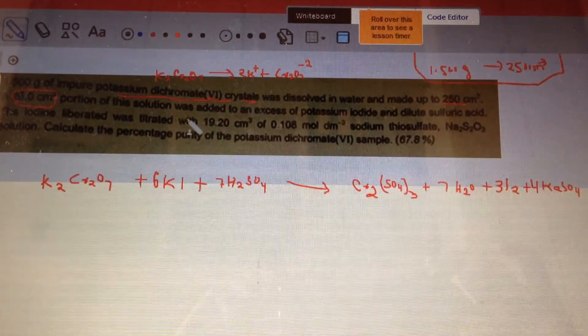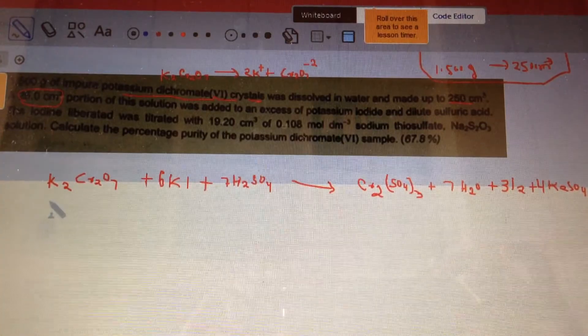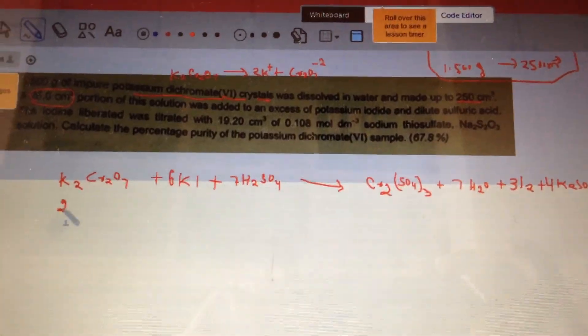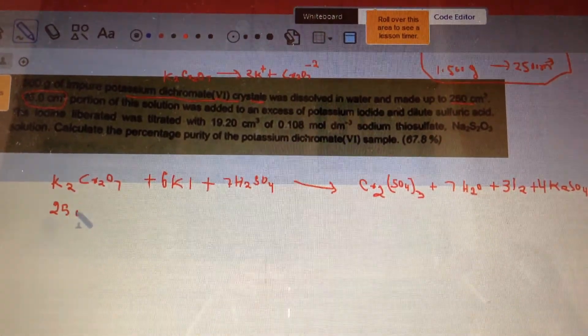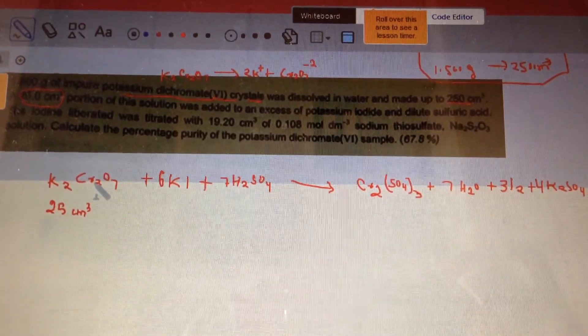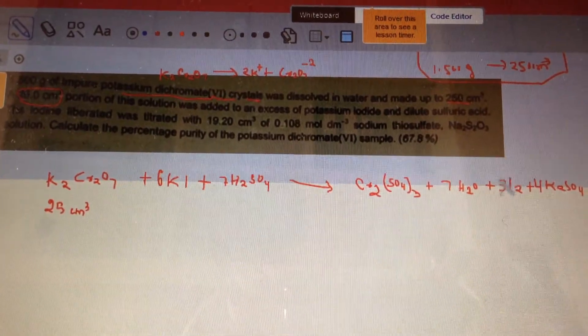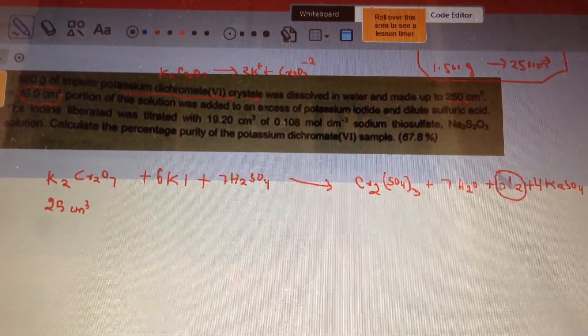So the second part of the question says, when we reacted 25 centimeter cubed portion of the solution with the KI and dilute sulfuric acid, we made iodine. So the iodine is I2 that was being made here,